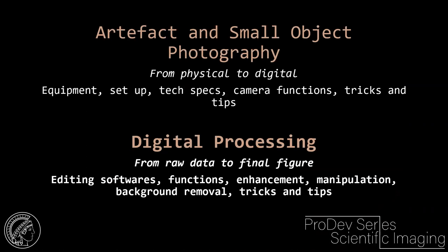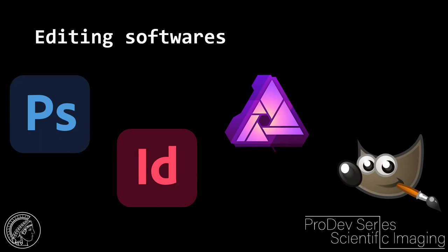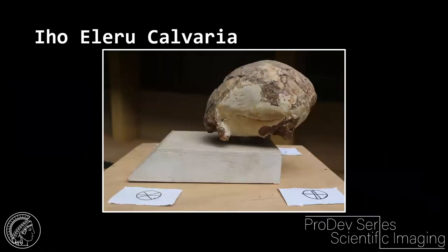The next step is digital processing. I'll go through the step-by-step process I use for producing final figures for publications. There are a variety of softwares that can be used — all for raster images. I'll be using Photoshop, but any other software, paid or free, can be used. Functions may have different names, but it can be done on virtually any software. As an example, I'll use a photo of a calvaria from a photogrammetry session.